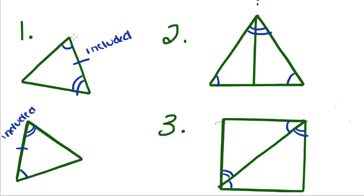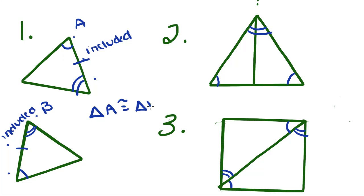Because we have an angle, a side, and an angle congruent to an angle, a side, and an angle. So therefore, we're going to call this A and this B — triangle A is congruent to triangle B by angle-side-angle.